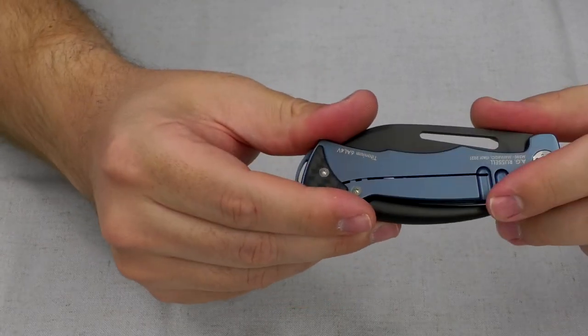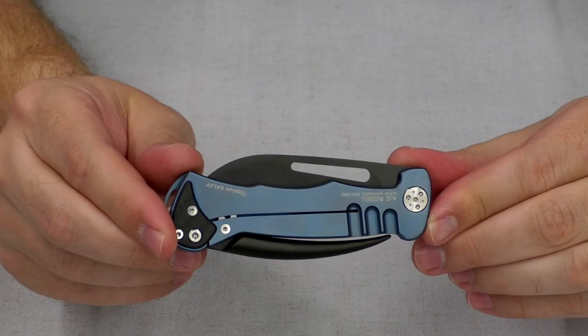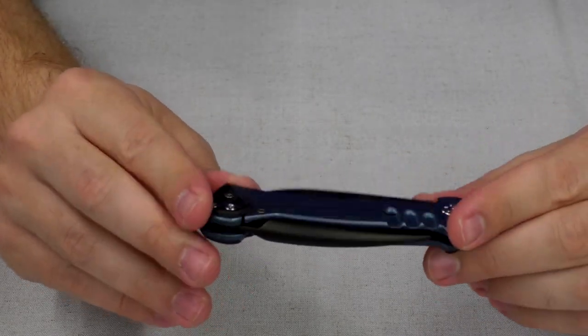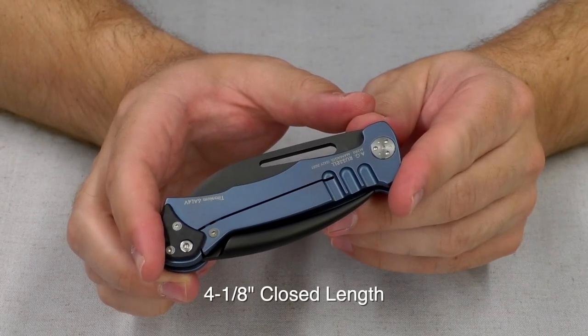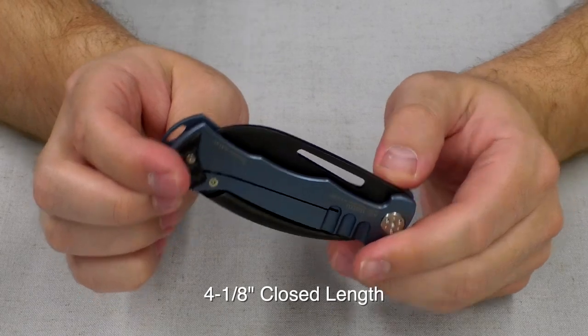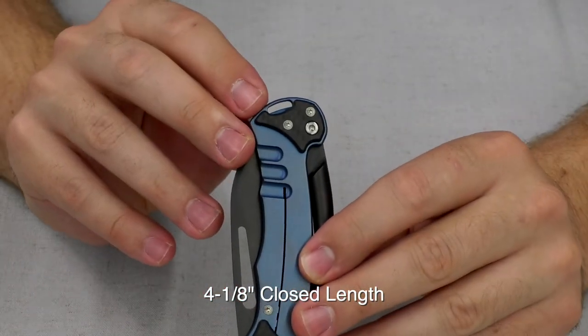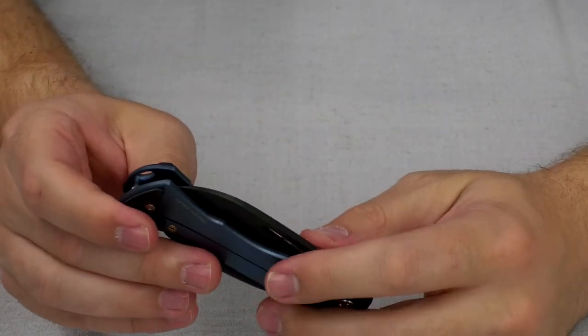Relief cuts on either side. You can see that both the locks are mirrored either way. We have carbon fiber bolsters here. The handle is four and one eighth inches long. We have no pocket clip, but it does have a lanyard hole there. So you can stick a little rope, put it in your pocket.